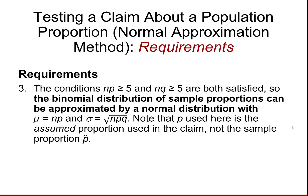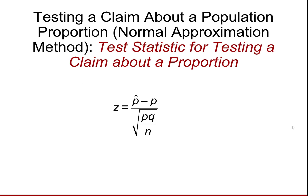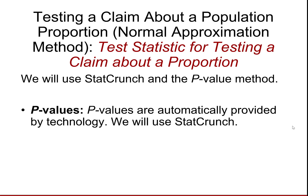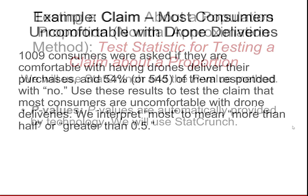Notice the P that we use here is the assumed value of the proportion in the claim — the value stated in the null hypothesis, not the sample proportion. Here's the Z statistic that we're going to use for testing the claim about a proportion. We'll use StatCrunch and also the p-value method, and the p-values will be automatically provided when we use StatCrunch.